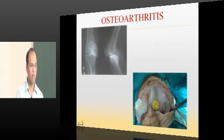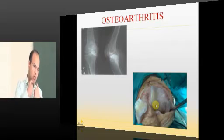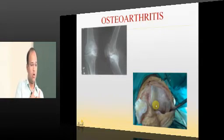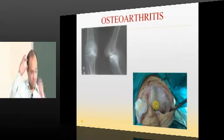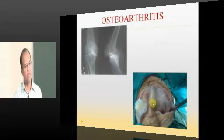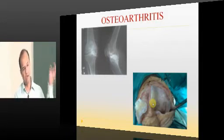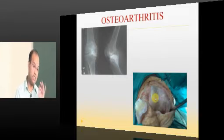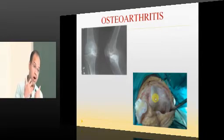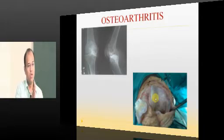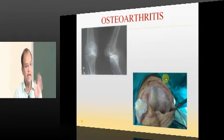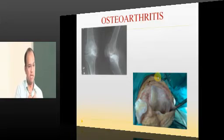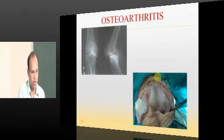Now once you have osteoarthritis, the joint surfaces are rough and you are not able to move smoothly. What you have to do? Either you fuse the joint so that it does not cause pain — that is called arthrodesis. Or if it is causing too much pain, deformity, and the patient is not able to walk and has to take tablets every day, and if the patient still wants movement at that joint, you have to keep a surface which is smooth enough so that it can glide and cause movement.